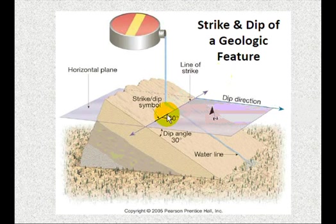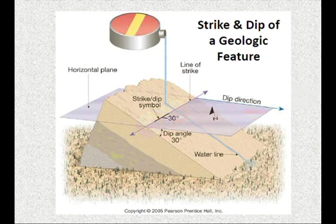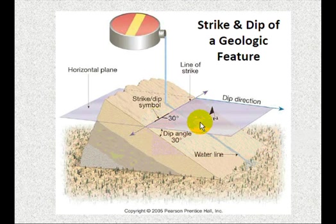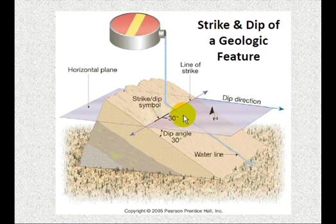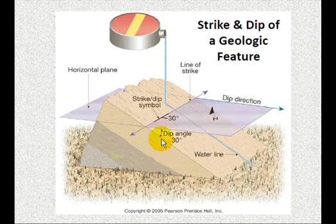Again, the strike is the line of intersection between this horizontal plane — just think of flooding the area with water and where that water intersects the top of this bed and that horizontal water surface. That is your line of strike. Determining the angle of that relative to true north gives you the strike direction. The dip is the measurement going down from this horizontal surface — think your water surface — down to the surface of your feature, in this case this bed at the top of this block of tilted rocks. That dip angle is 30 degrees.